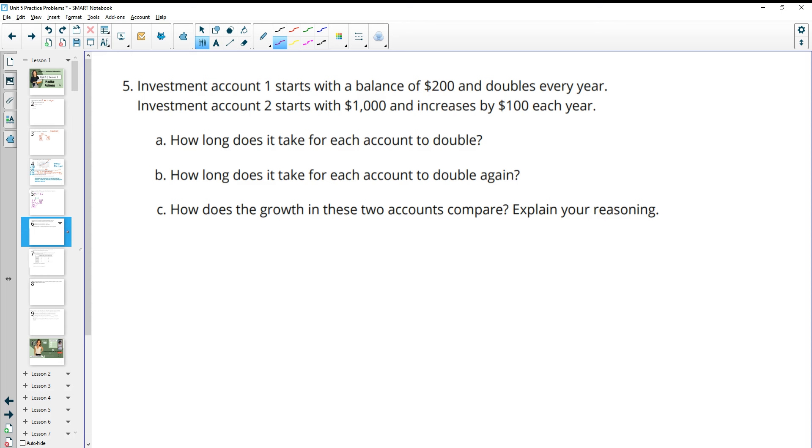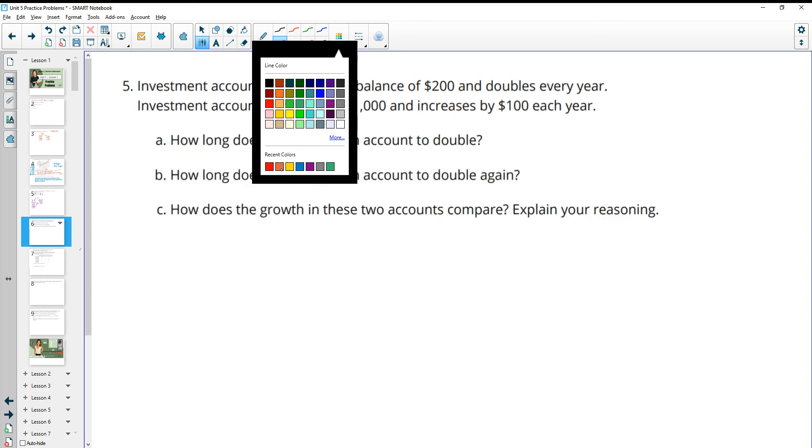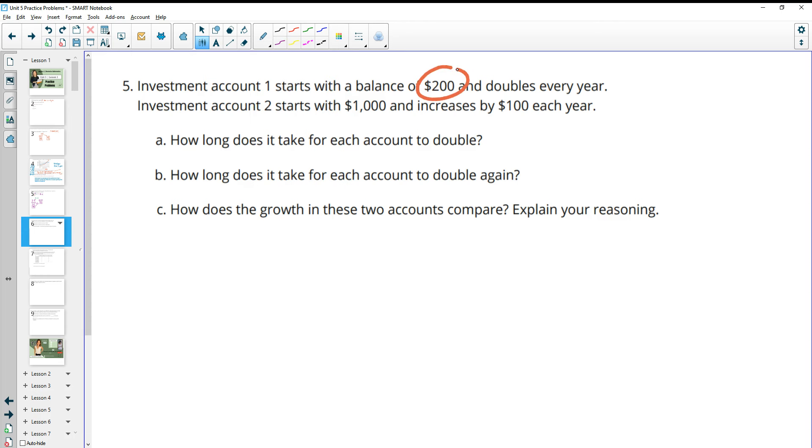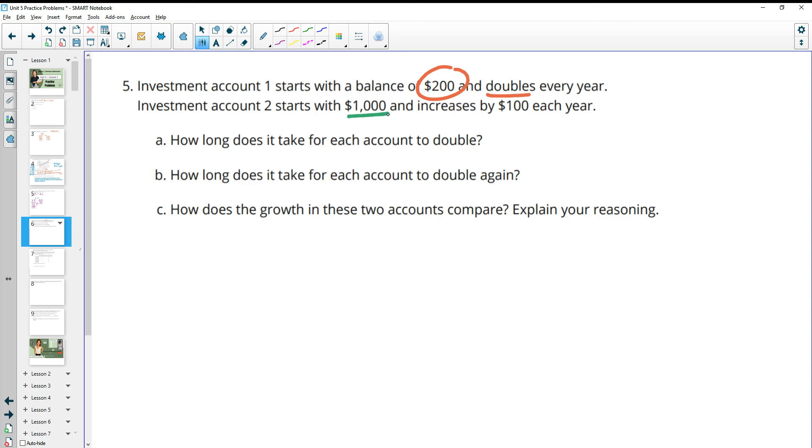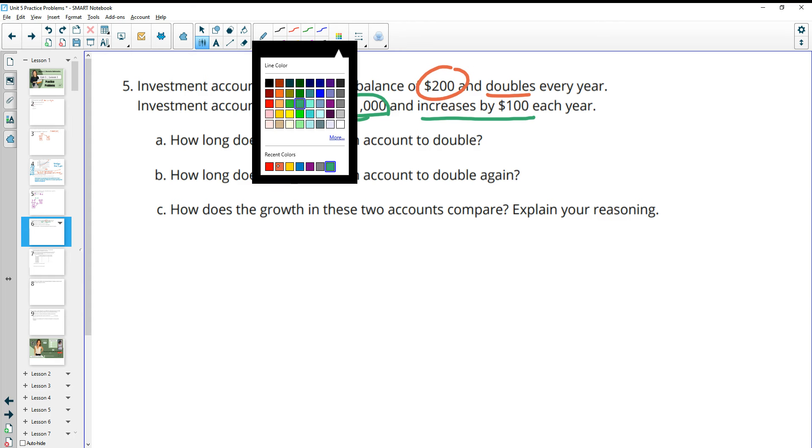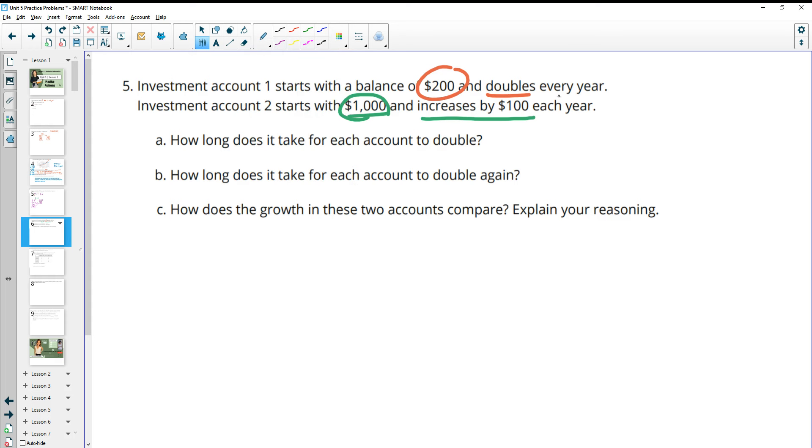Number 5, investment account 1 starts with a balance of $200 and doubles every year. Investment account 2 starts with $1,000 and increases by $100 each year. How long does it take for each account to double? So this first one says it doubles every single year. So for account 1, it's just going to take one year.